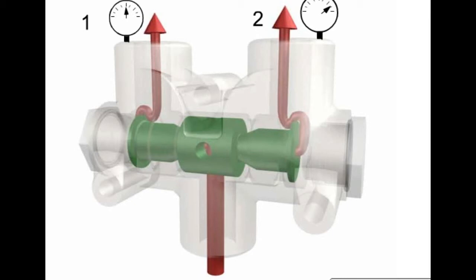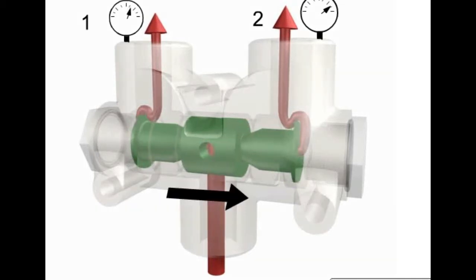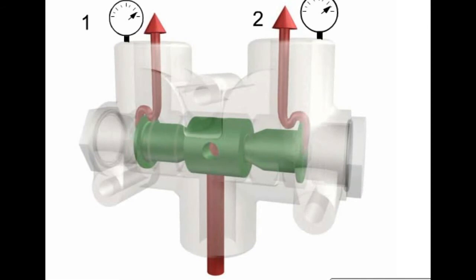The flow to both outlets remains constant. If pressure at outlet 1 increases, the spool will shift slightly to the right, opening the passage to port 1 and slightly closing the opening to outlet port 2.